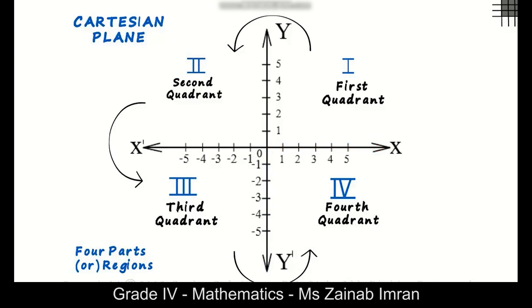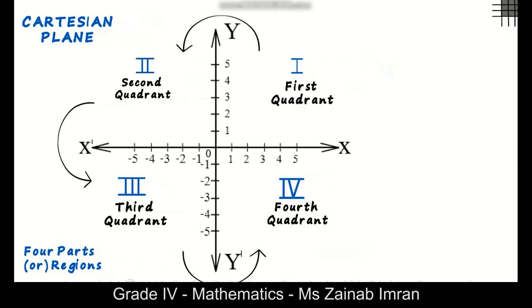Does that mean that every point on the plane will lie in any one of the quadrants? Let's mark a few points on the plane and see which quadrants they lie in. Let's assume I mark point A here.